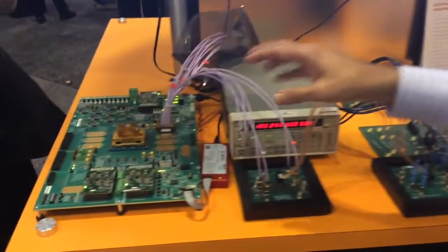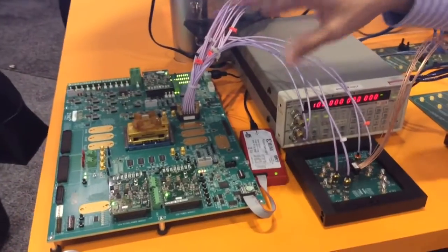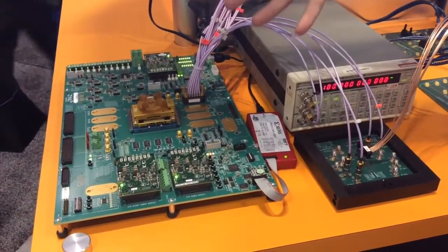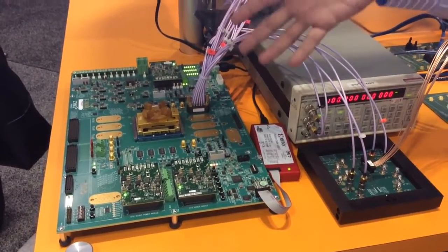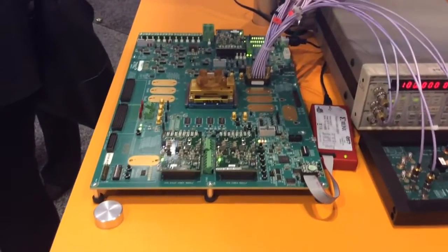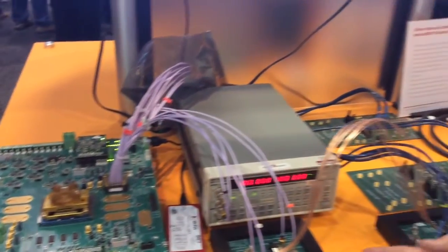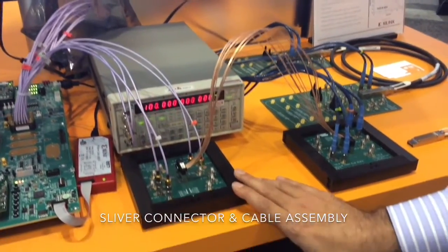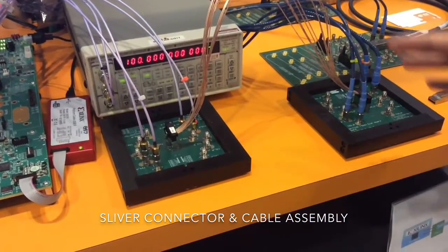What you see here is Xilinx's FPGA. It's providing a signal rate of PCIe Gen 4 at 16 gigabits per second. It then comes into our new sliver connector and cable assembly that's about half a meter long.